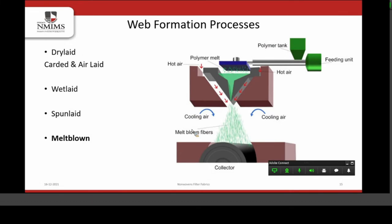The last method of web formation is melt blown, where an additional attachment of compressed hot air is added to the spunneret at the bottom side of the spun laid spinneret. These hot air blasts convert the single filament into very fine microfibers, which are then collected on the surface of a collector. This technology gives us a nonwoven fiber web with very fine fibers, and it is a very effective technique used worldwide for the manufacturing of face masks.